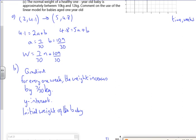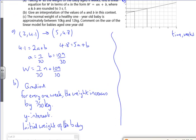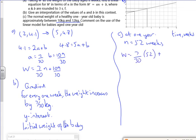C says the normal weight of a healthy one year old baby is approximately between 10 and 12 kilos. So let's see what happens at one year. So at one year, n is 52 weeks. So the weight is 7 over 30 times 52 plus 109 over 30. So the weight is roughly 15.8 kilos.